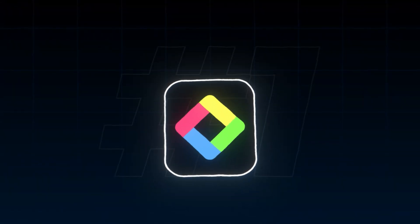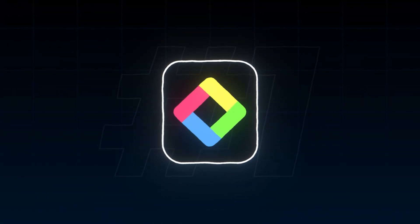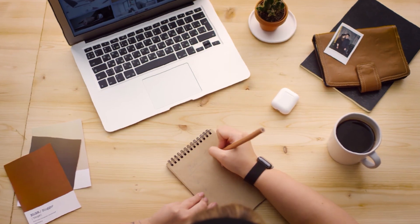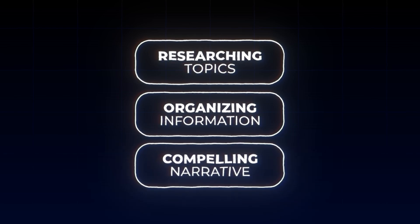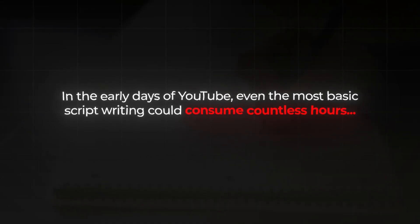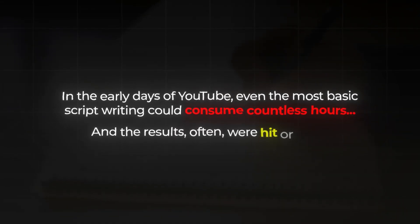The first AI tool that will help you save a lot of time and make you a better video is Glasp AI. Back in the day, writing a good script required a lot of skills and training. You needed to be proficient in researching topics, organizing information, and crafting compelling narratives. It was a long, painful, and most importantly, time-consuming process. In the early days of YouTube, even the most basic scriptwriting could consume countless hours, and the results often were hit or miss.